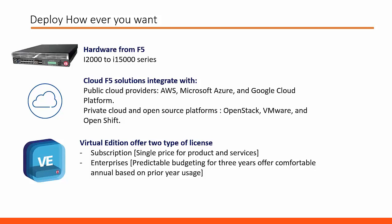Hardware is offered from F5, with a wide range of models to meet enterprise loads starting from i2000 to i15000 series. Virtual edition offers a budgetary plan with two types of licensing options: virtual edition subscription, which you can purchase as a single product including service, and enterprise license, which offers a comfortable annual price based on a predictable budget considering previous year usage.